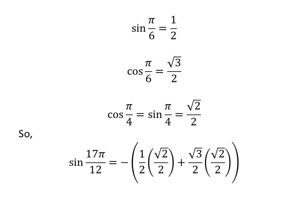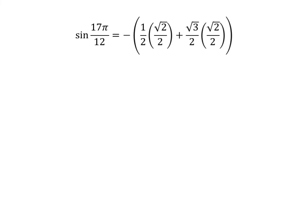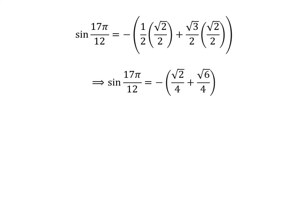We get sine of 17 times pi upon 12 is equal to minus of half times square root of 2 upon 2 plus square root of 3 upon 2 times square root of 2 upon 2. Straight multiplication gives us sine of 17π/12 is equal to minus of square root of 2 upon 4 plus square root of 6 upon 4. As the denominator of both fractions is the same, sine of 17π/12 is equal to minus of square root of 2 plus square root of 6 upon 4.